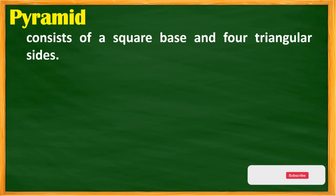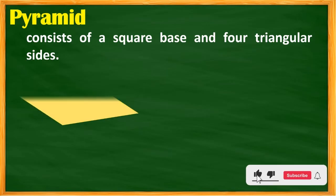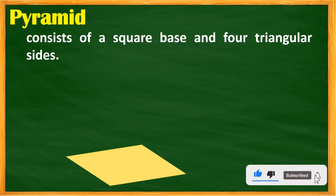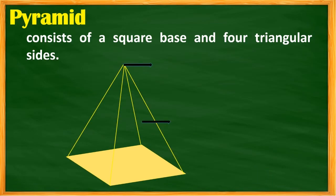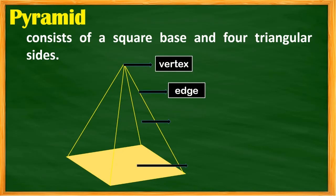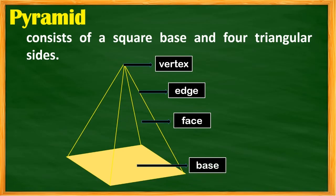A pyramid consists of a polygonal base and triangular sides. This example is a square pyramid, which has a square base, a vertex at the top, edges, and faces. The naming of a pyramid is based on its base — since this pyramid has a square base, it is called a square pyramid.